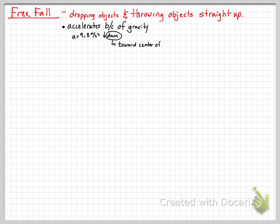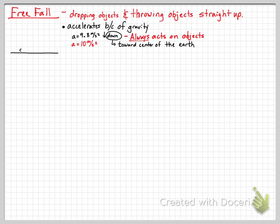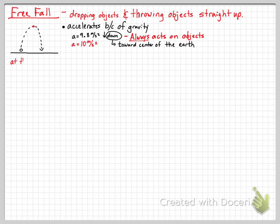Down means toward the center of the Earth. Any object in the air always has gravity acting on it. In this class, instead of always using 9.8, we're going to use 10 meters per second squared for acceleration due to gravity. We'll be off by two percent, but it lets us move through math more quickly. On AP exams, if you get within two percentage points of an answer on a multiple choice question, you'll find it — and you'll be able to calculate quickly using whole numbers.